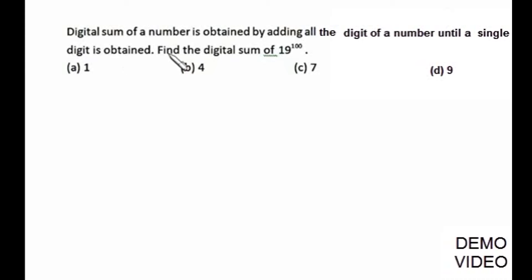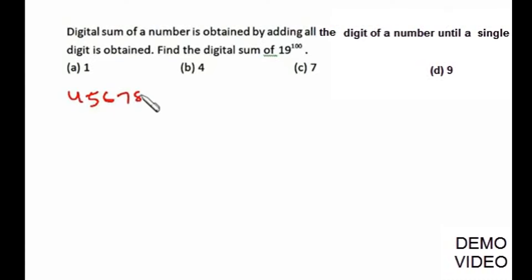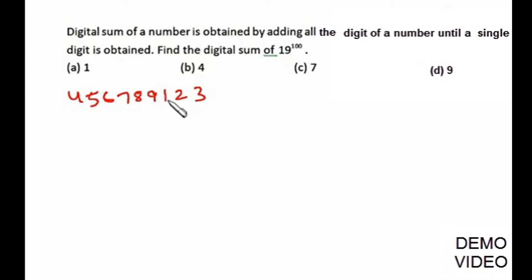The digital sum of a number is obtained by adding all the digits of a number until a single digit is obtained. Find the digital sum of 19 raised to 100. Before we proceed, let me share a concept. Suppose I have the number 456789123 and I wish to find its digital sum: 4+5=9, 9+6=15, 15+7=22, 22+8=30, 39, 40, 41, 42, plus 3 = 45, which gives 9.